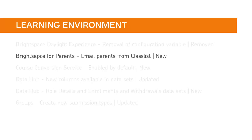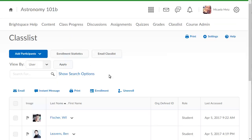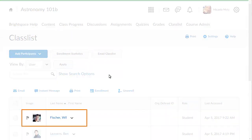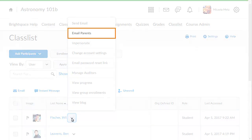Teachers can now directly email parents from Classlist using the Learner's Context menu. The Email Parents permission must be set for instructors at the Organization and Course Offering levels. From Classlist, click the Learner's Context menu and select Email Parents.